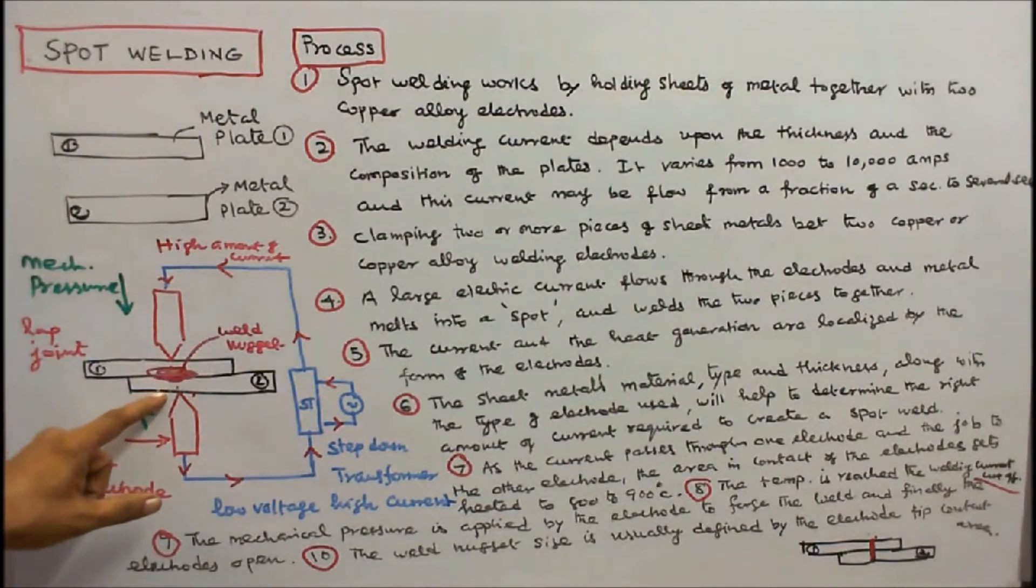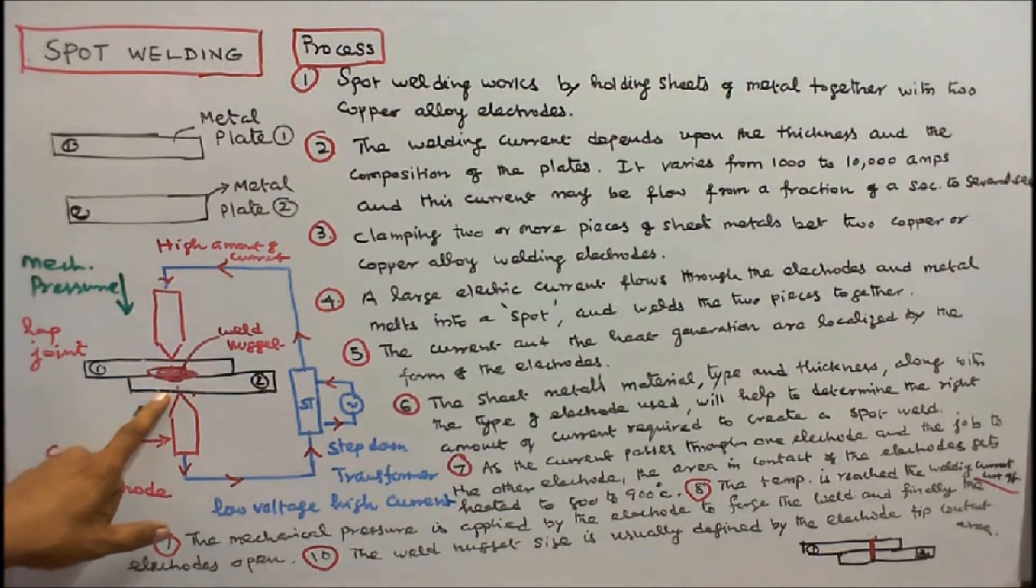A large electric current flows through the electrodes and metal melts into a spot and welds the two pieces together.